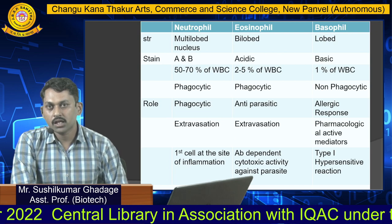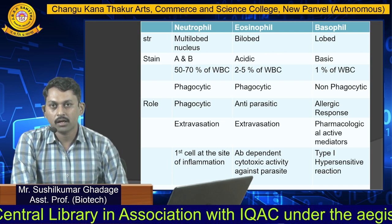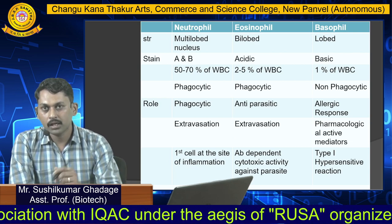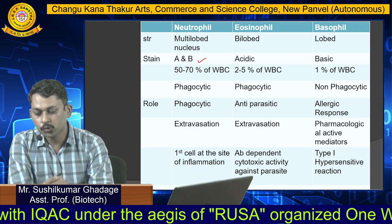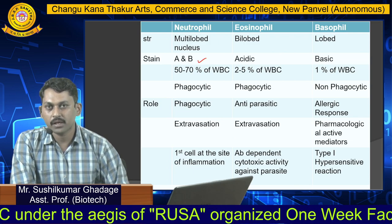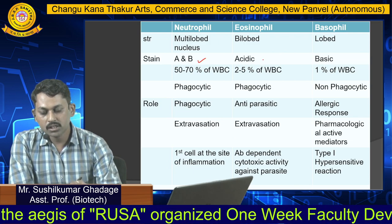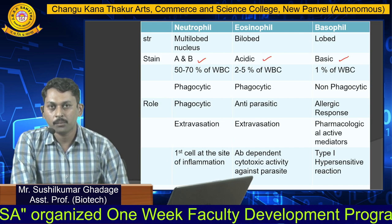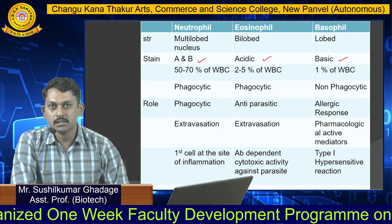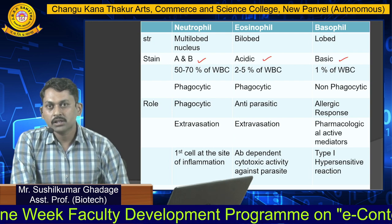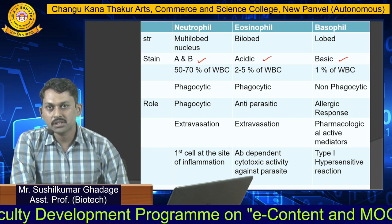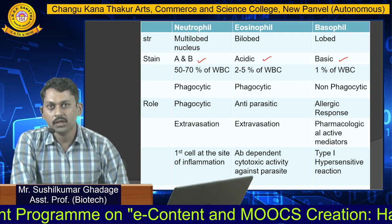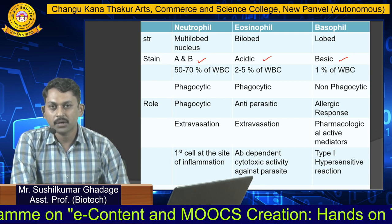Regarding staining properties of these three granulocytes: neutrophils are stained with both acidic and basic dyes. Eosinophils are stained only with acidic dyes, while basophils stain only with basic dyes. That is why their names are given on the basis of staining and nucleus properties.